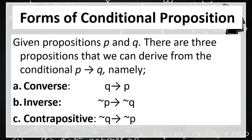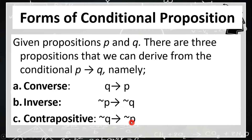And last, the contrapositive. We compose the contrapositive statement by interchanging the hypothesis and conclusion of the inverse of the same conditional statement. In other words, to find the contrapositive, we first find the inverse of the given conditional statement, then swap the roles of the hypothesis and the conclusion. Therefore, the contrapositive of the conditional statement P implies Q is the implication not Q implies not P.